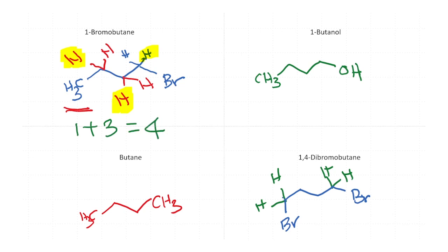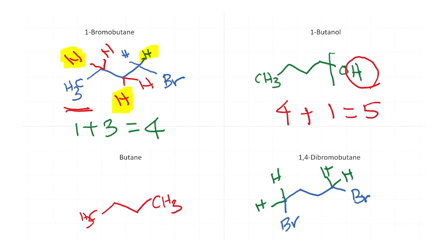1-Butanol follows exactly the same pattern as 1-bromobutane, giving four signals for the carbon framework. The only additional signal here is for the OH hydrogen. So you would expect five distinct signals in 1-butanol.